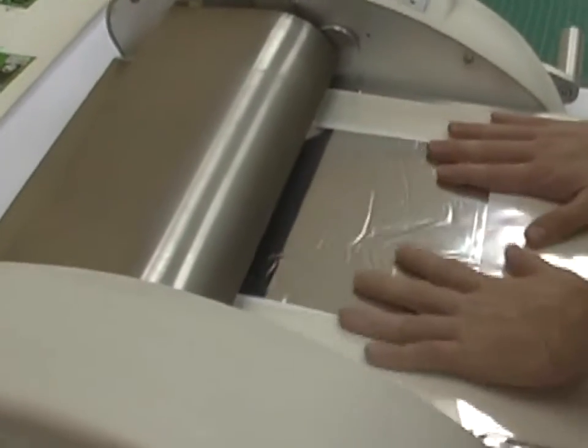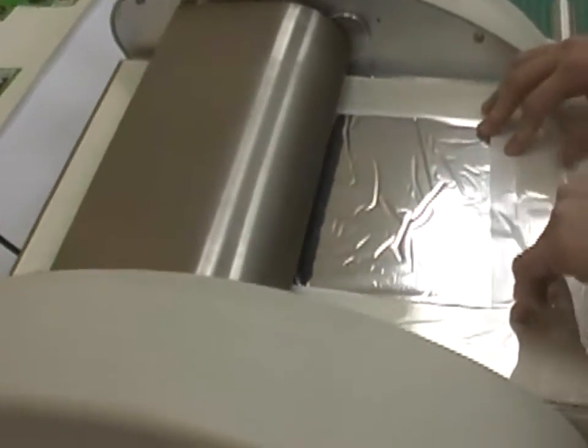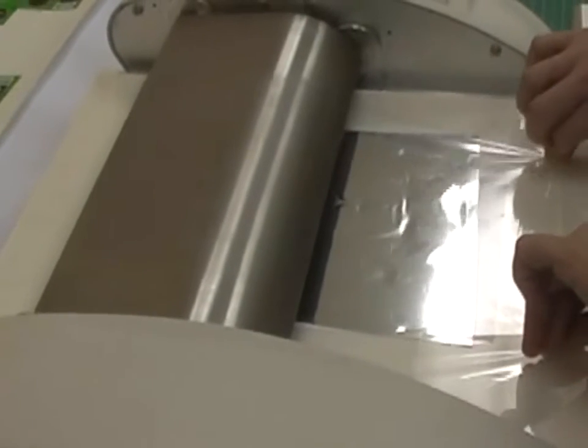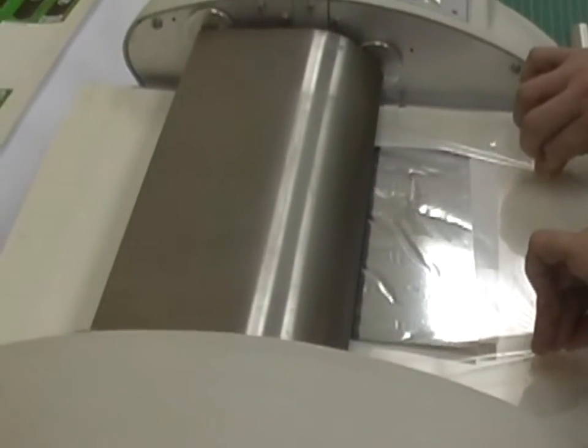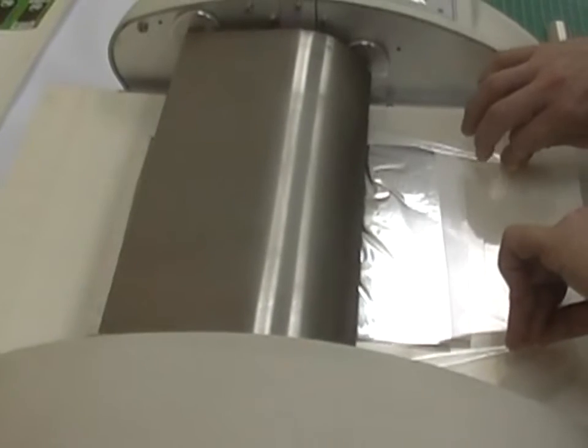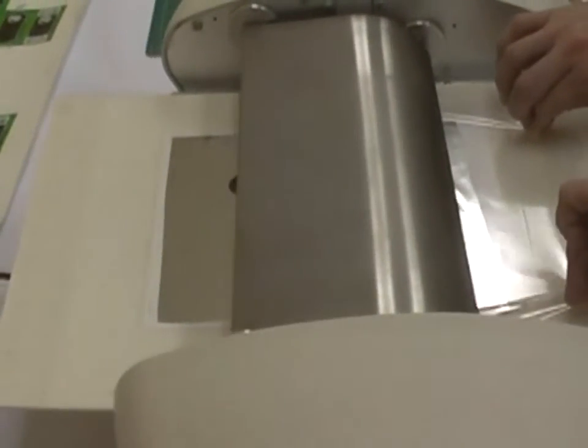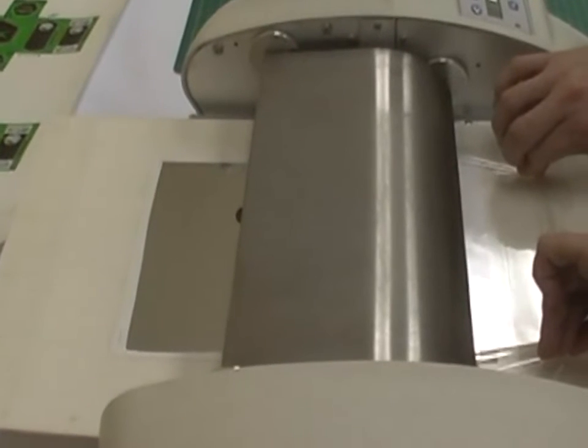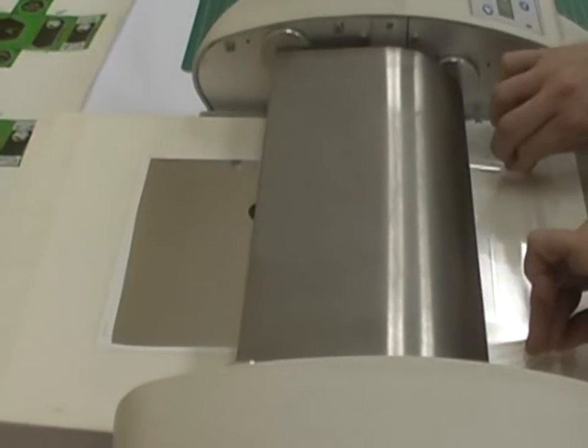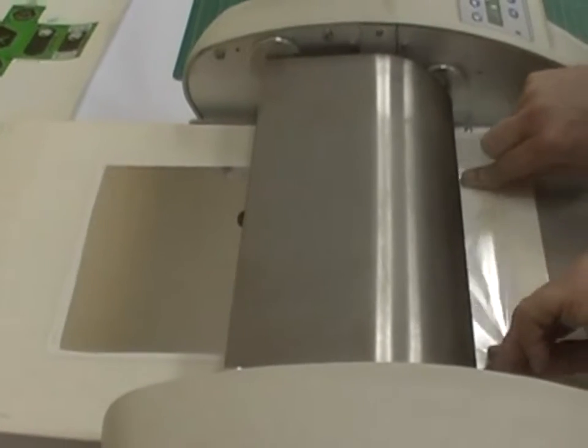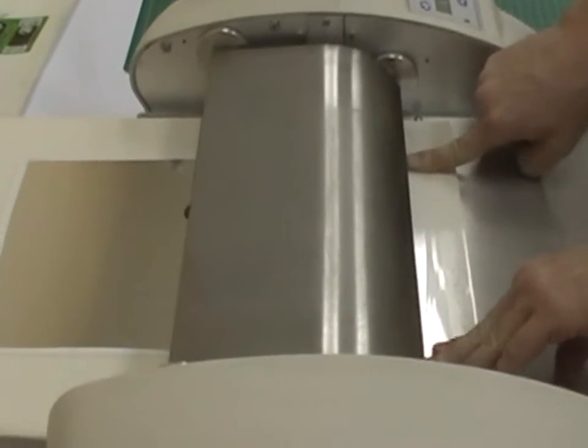Your laminator, in order to transfer foil, needs to be at least 300 degrees Fahrenheit or 150 degrees Celsius. That's minimum. Again, I'm using a little bit of tension on the cover sheet to prevent wrinkles as it goes through the laminator.